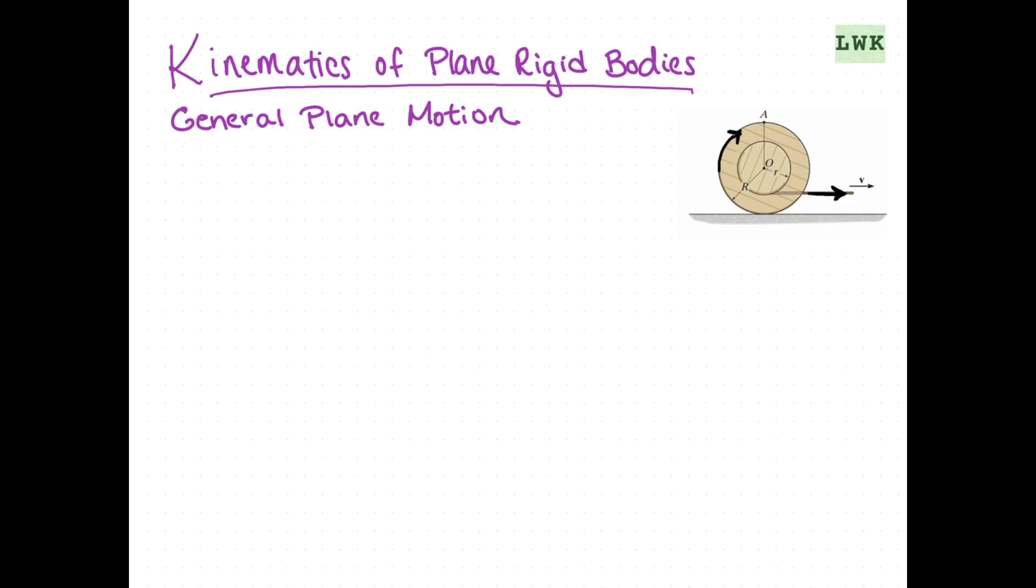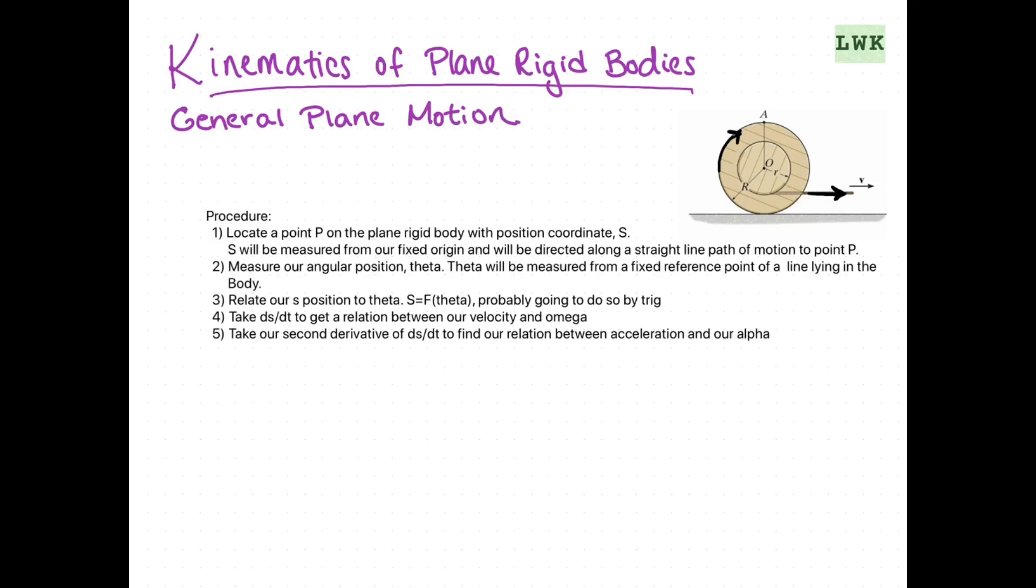We're going to write out our procedure for how we're going to approach these problems. In general, we're going to use a point P on our plane rigid body undergoing rectilinear translation, and then relate that point P to our angular velocity and angular acceleration of a line within the body. In short, this is our procedure for solving these general plane motion problems.